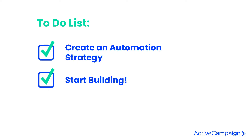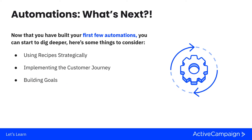In our previous session we talked about how you can create an automation strategy. Today we move on to things we haven't covered yet: using recipes more strategically, applying the customer journey to your automation practices, and building goals. Using recipes strategically lets you automate the processes you want, and we have over 600 recipes in our library. Think about the best strategies for meeting your contacts where they are in their journey with your business.